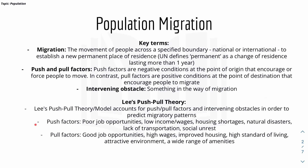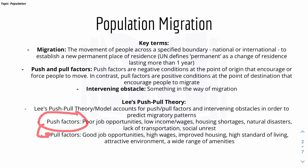Push factors include poor job opportunities in the country, low income or wages, or natural disasters. Pull factors at the point of destination include good opportunities, higher wages, or an attractive environment. Push factors are often the opposite of pull factors, which prompts people to move from one country to the other.